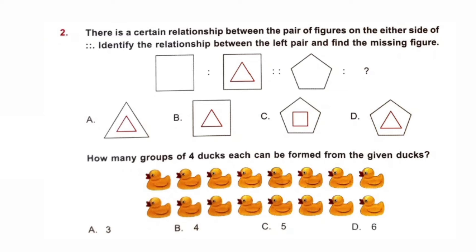Question number 2. There is a certain relationship between the pair of figures on either side of proportion. Identify the relationship between the left pair and find the missing figure. Clearly, this is a square. And in the second figure, a triangle is inside the square, which is one side less than the square. In a similar pattern, this is a pentagon. So, we need a figure which is a five-sided pentagon and inside it, there is a square which has four sides, one less. According to this, option C is correct.